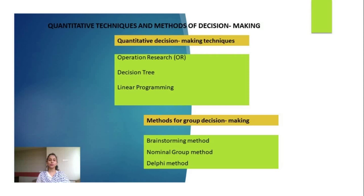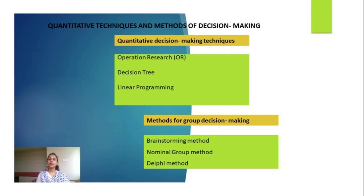Now let us discuss methods used for group decision making. The first is the brainstorming method, where the problem is presented before a group and members are asked to contribute possible ideas for its solution. The second is the nominal group method, where the group leader outlines the problem, members write down their ideas, then present them, and group discussion takes place. Members are then asked to rank the ideas, and the idea receiving the highest ranking is selected as the solution.